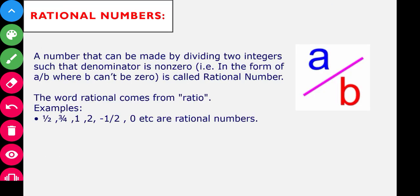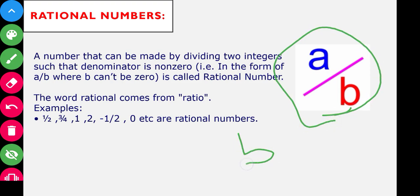This is the definition of a rational number. A number that can be made by dividing two integers such that the denominator is non-zero. That means when a number is in the form of a/b, where b is not equal to zero, it is called a rational number.